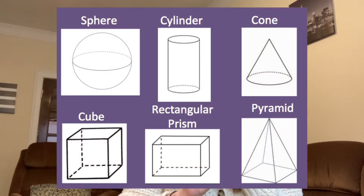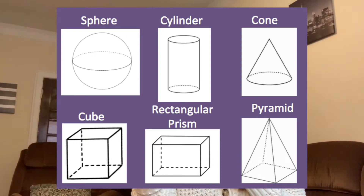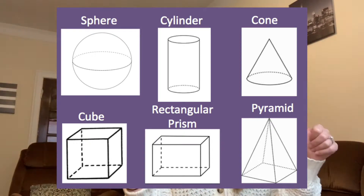Today we are going to be learning about solid figures — these are three-dimensional shapes. The ones we're learning about today are sphere, cylinder, cone, cube, rectangular prism, and pyramid. I looked around my apartment to see if I could find examples of these solid figures.